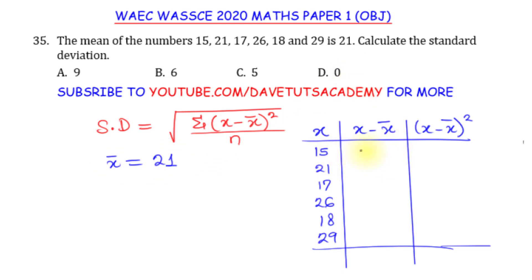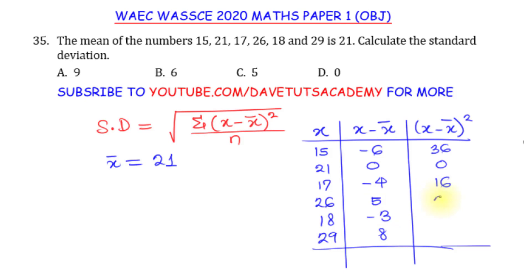So: 15 minus 21 is minus 6; 21 minus 21 is 0; 17 minus 21 is minus 4; 26 minus 21 is 5; 18 minus 21 is minus 3; and 29 minus 21 is 8. Now squaring these entries: minus 6 squared is 36; 0 squared is 0; minus 4 squared is 16; 5 squared is 25; minus 3 squared is 9; and 8 squared is 64.